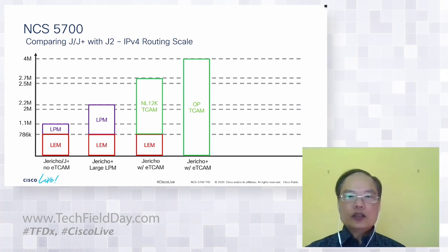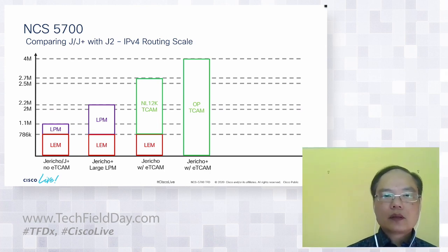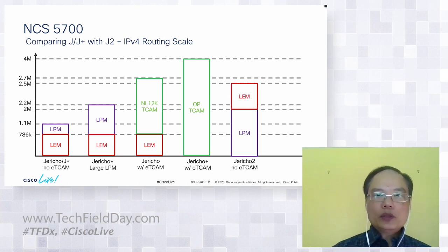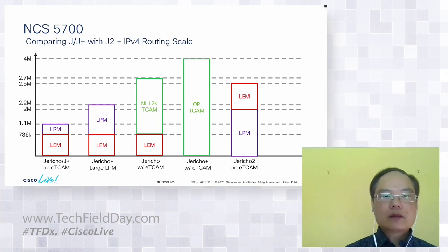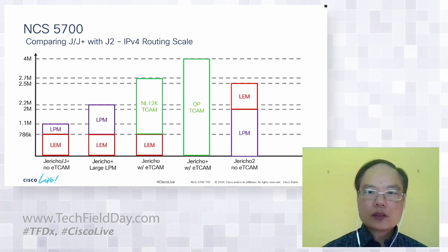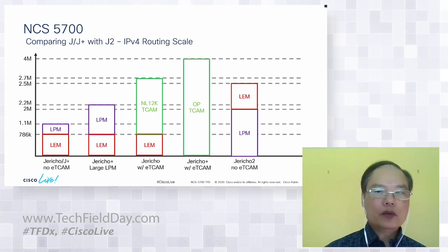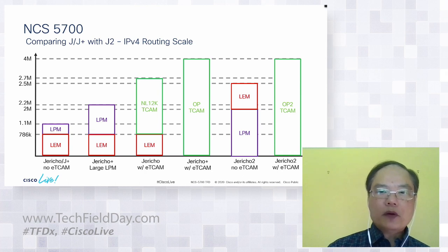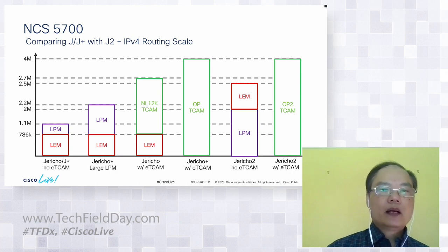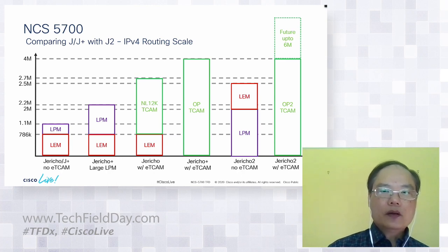This is a chart on current Jericho and Jericho Plus route scale. With Jericho 2 without external TCAM, it could support roughly 2.5 million IPv4 prefixes, which is larger than the 2 million prefixes of the Jericho Plus large LPM version. With external TCAM at FCS, Jericho 2 supports the same 4 million prefixes as the current Jericho Plus with external TCAM. However, we could support much higher scale in future IOS XR versions.